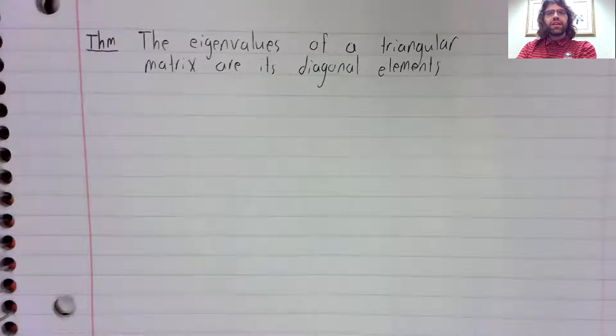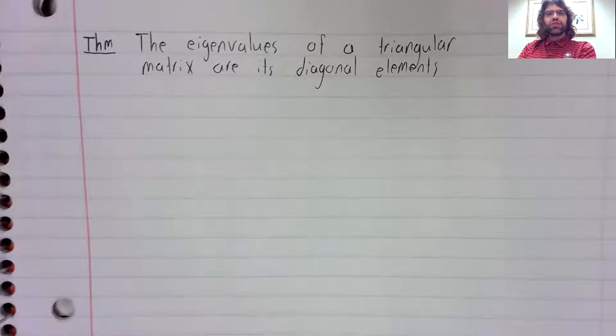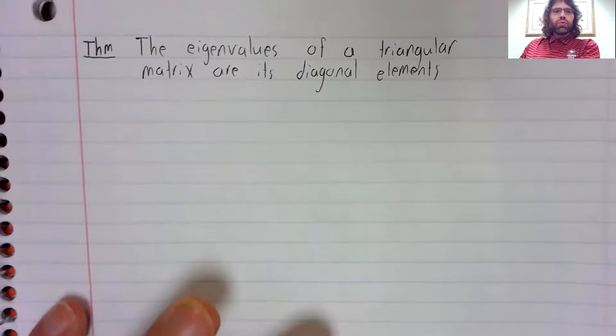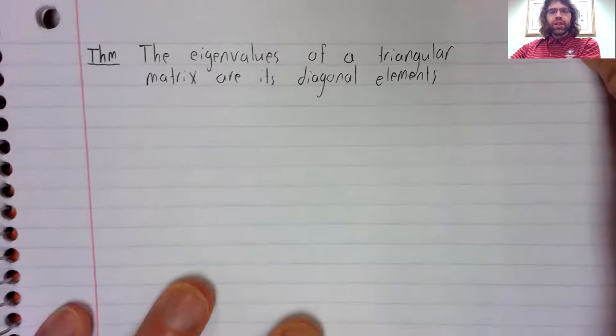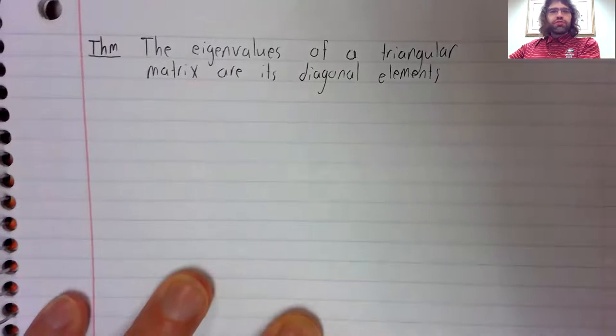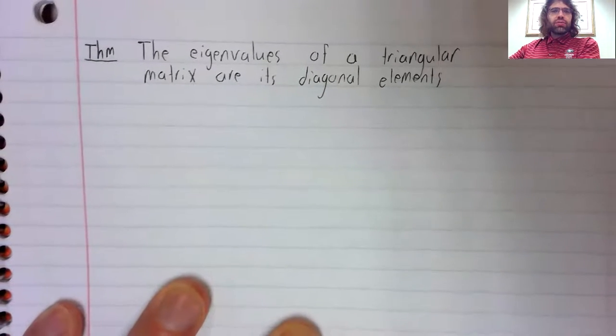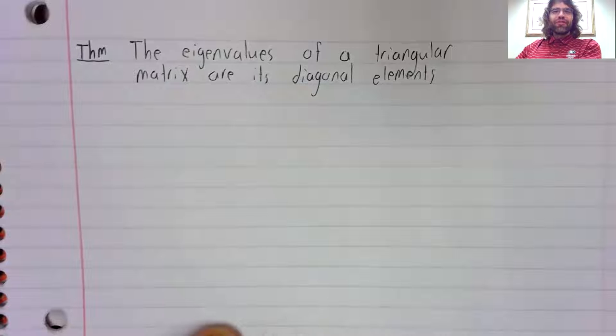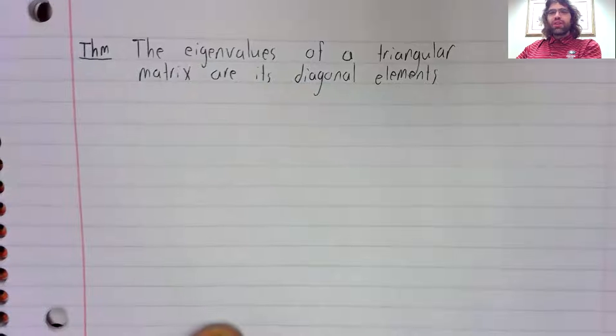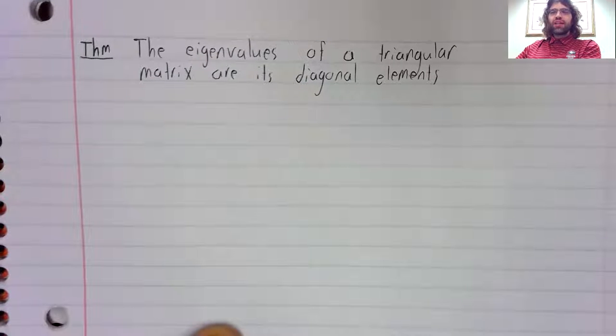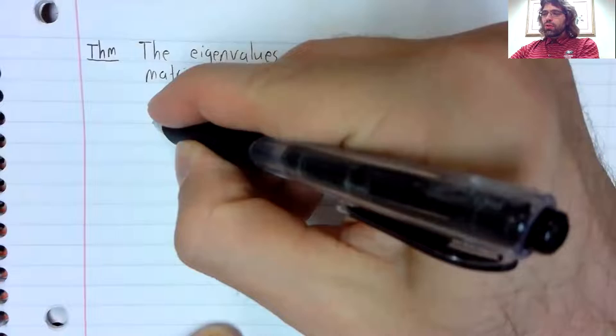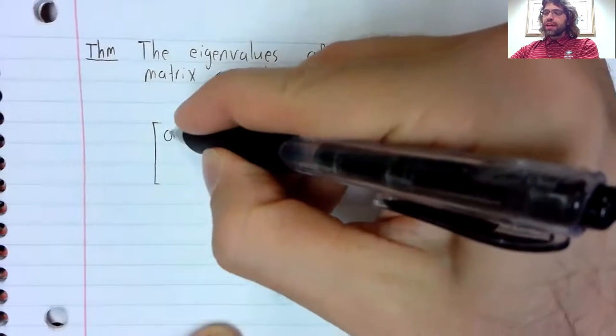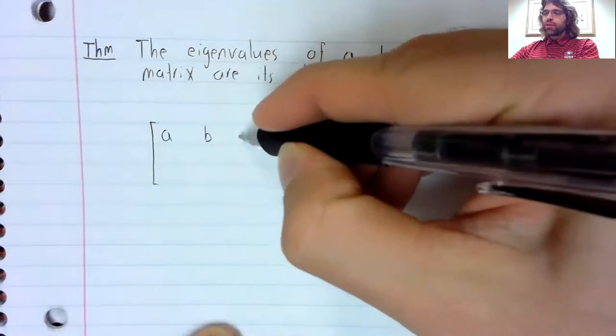The eigenvalues of a triangular matrix are its diagonal elements. Remember that a matrix is triangular if either all of the numbers above the diagonal or all of the numbers below the diagonal are zero.